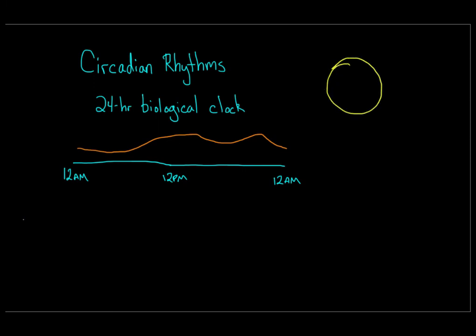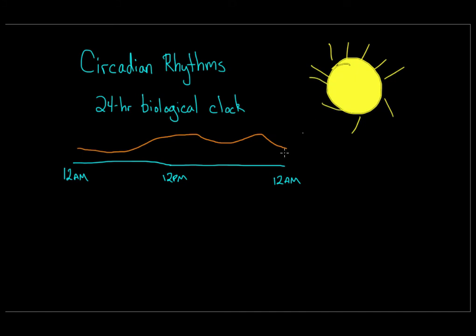Daylight is a big cue for circadian rhythms, and even artificial light can affect your circadian clock. That's why when you travel somewhere with a big time difference, airplanes will often adjust their lights in accordance with the time zone of your destination — they're trying to help you reset your biological clock. But resetting that clock takes time, which is when you experience jet lag: your biological clock says it's time to sleep, but your new time zone says it's time to wake up.